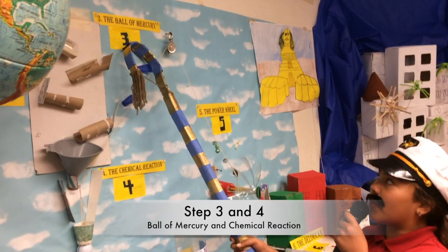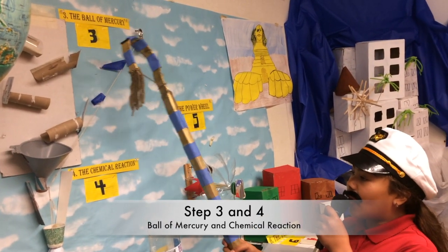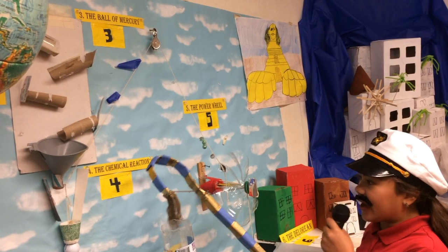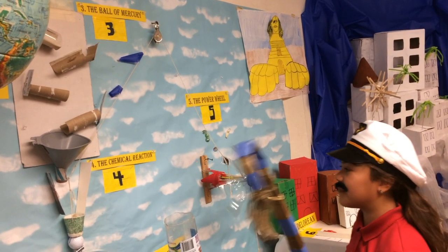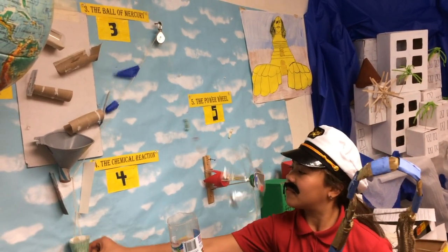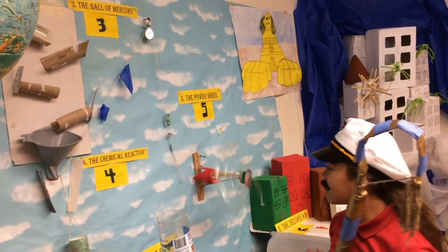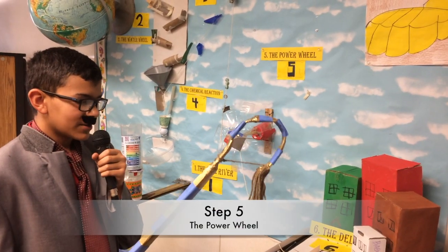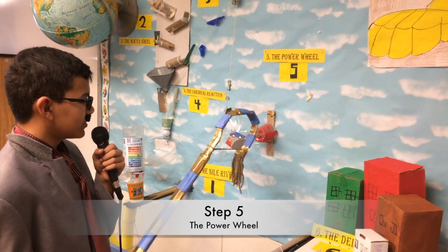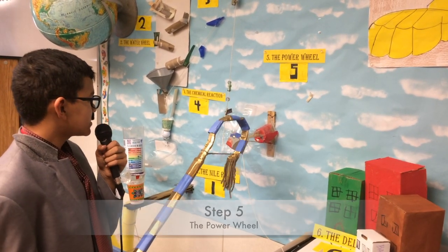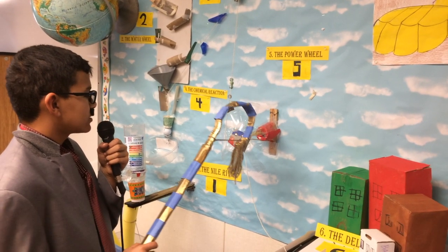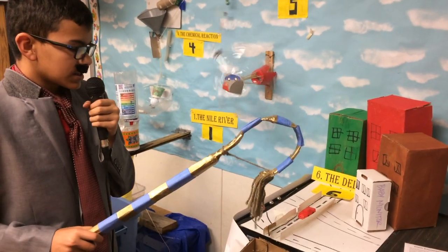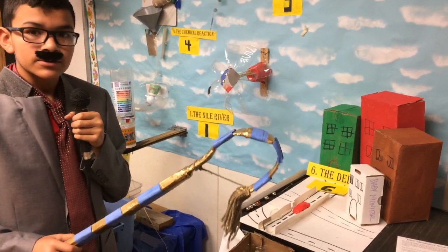Step 3: The ball of mercury. The ball will land into the cup and create a chemical reaction. Step 5: The power wheel. The power wheel will be released by the chemical reaction, which detaches the DeLorean.